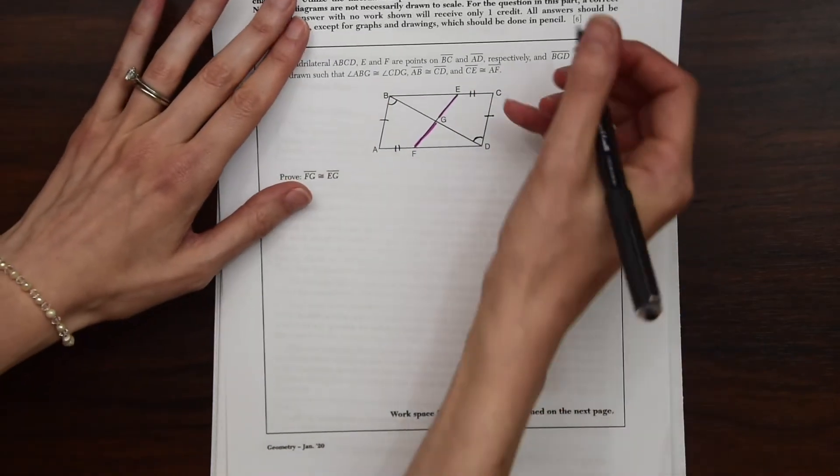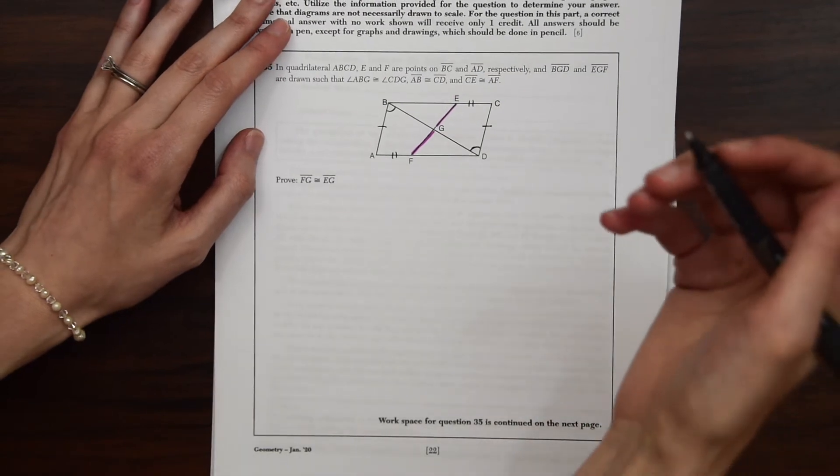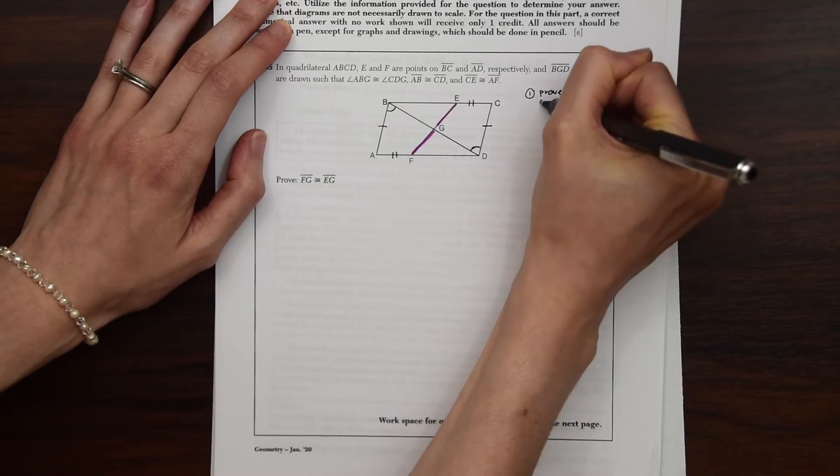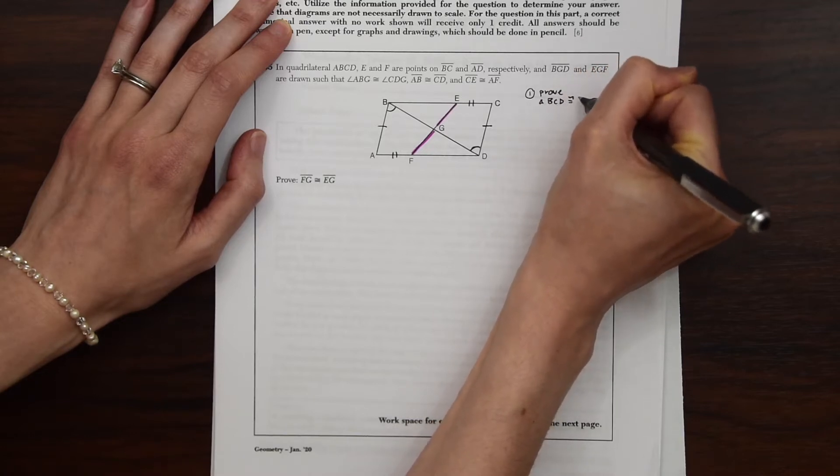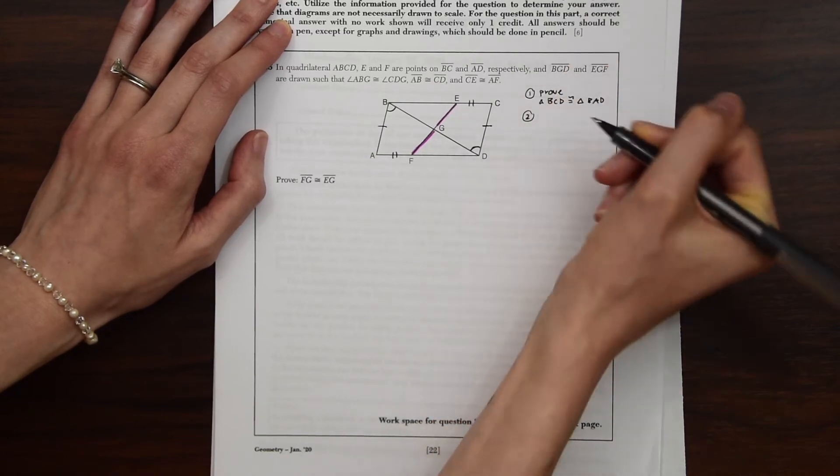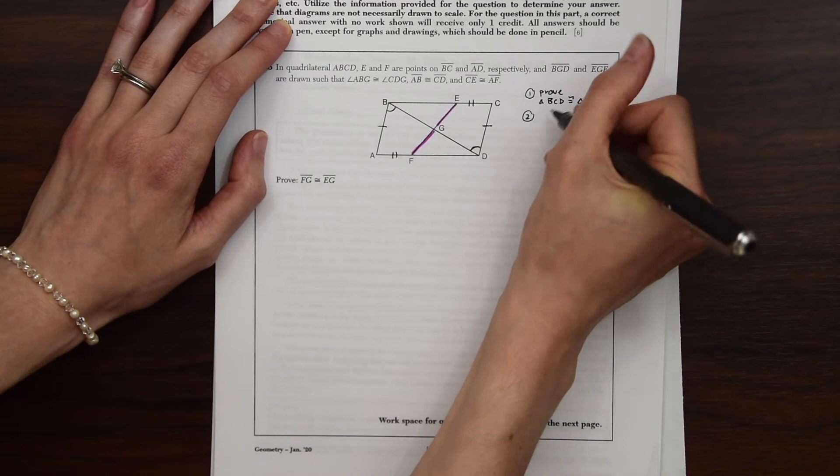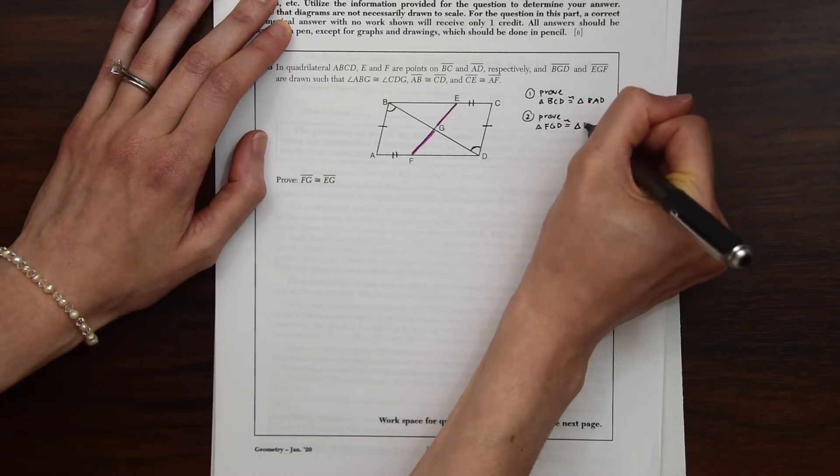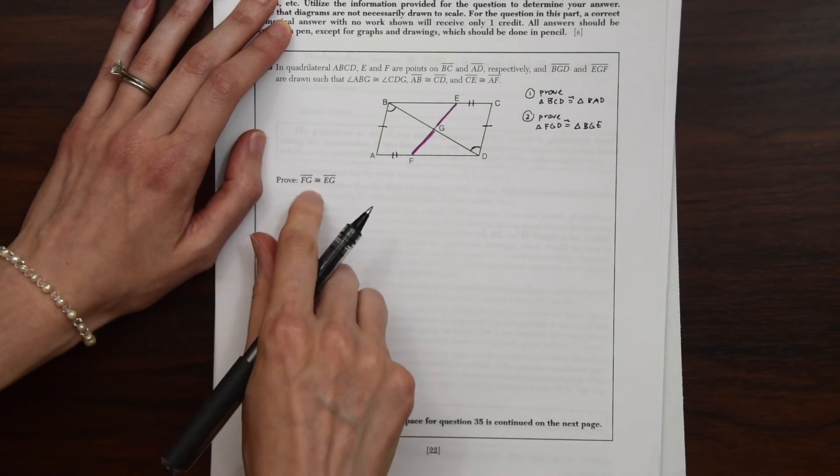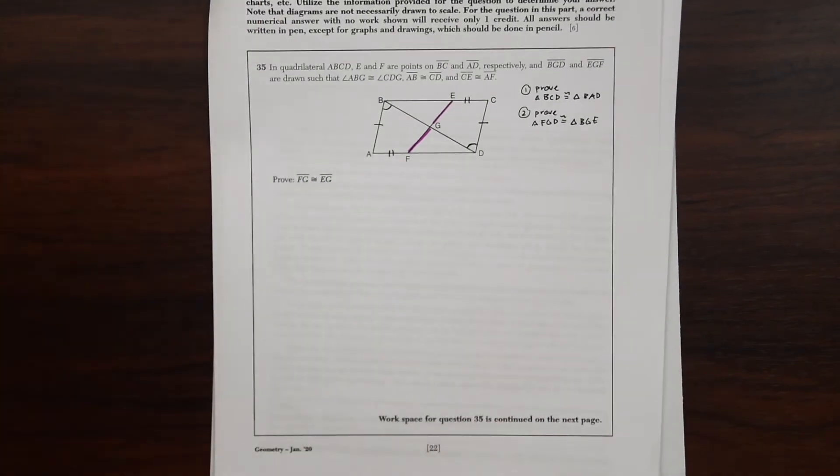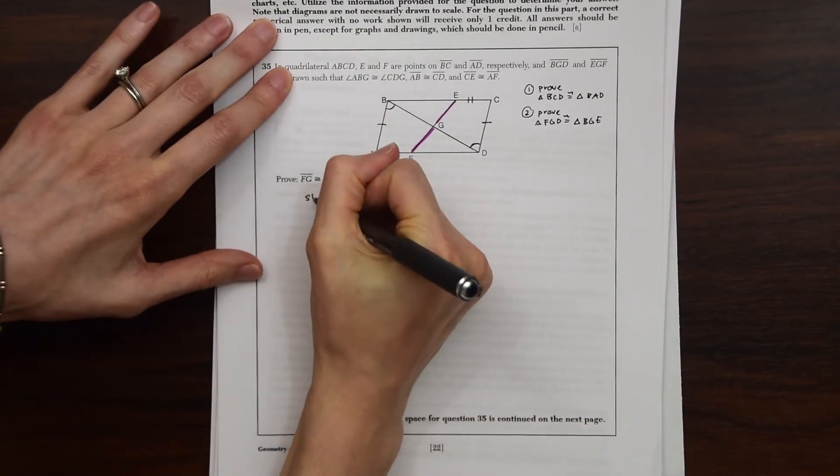So that's going to be our plan here. Just to outline the goal of the proof we're going to make, we're going to prove triangle BCD congruent to triangle BAD. Then we're going to prove triangle FGD is congruent to triangle BGE. And then finally, that's when we can prove FG is congruent to EG by CPCTC. So let's start by writing our statements and reasonings.